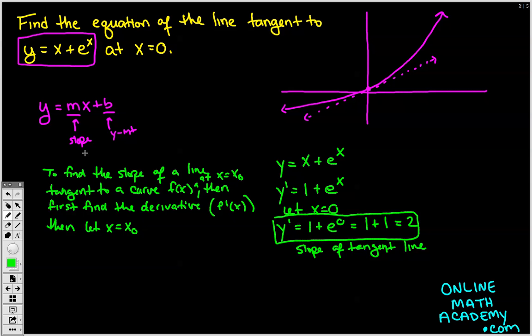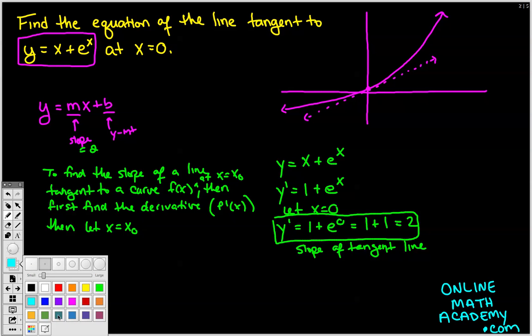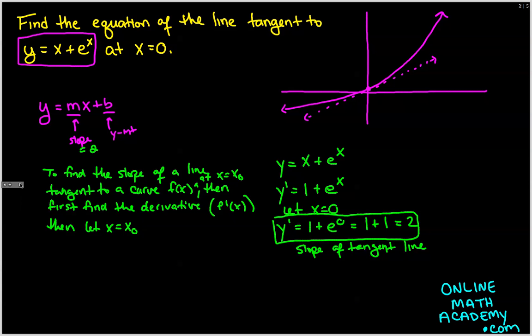So now we know that the slope here is equal to 2. Okay, so let's just rewrite what we have here. So we have that y equals 2x plus b. Now we need to find a value for b, right? We need to define a value for b if we're actually going to define this line well. Okay, how do we do that?